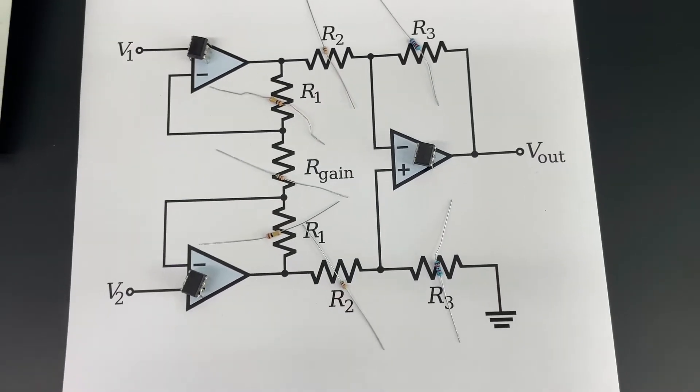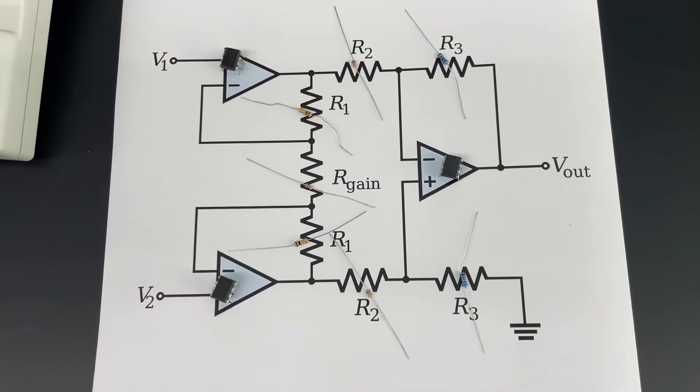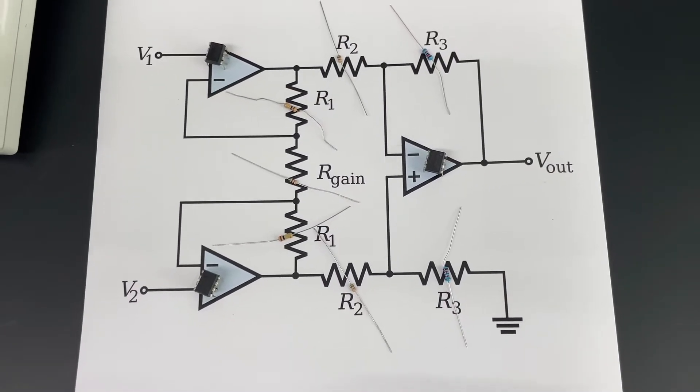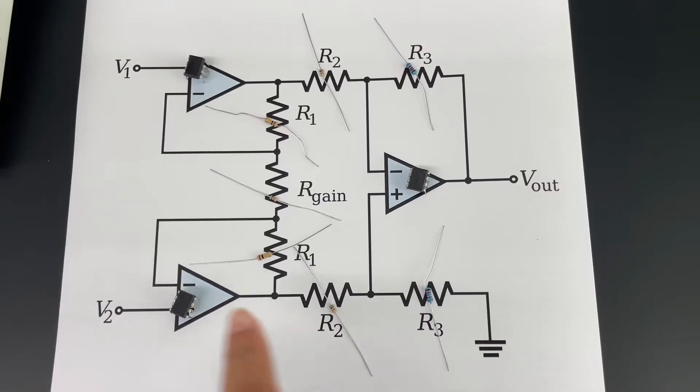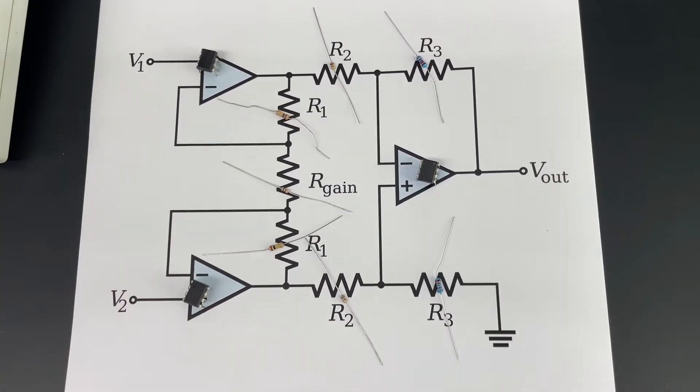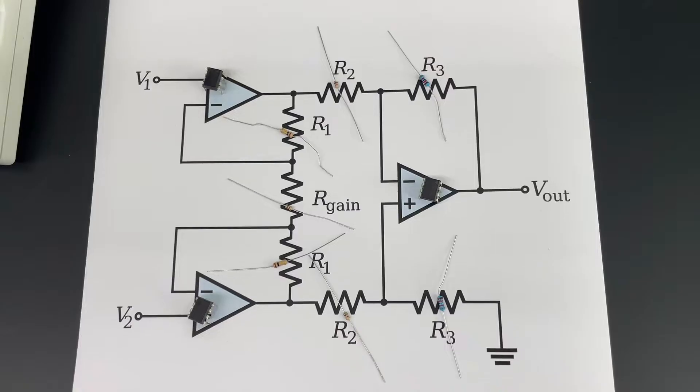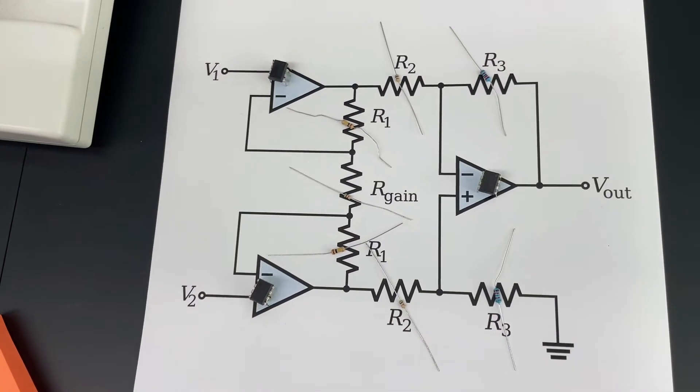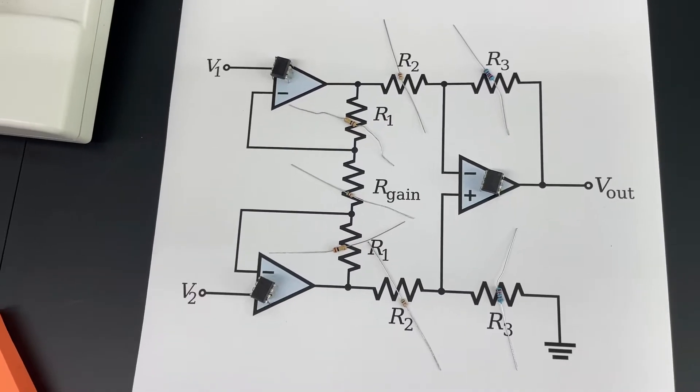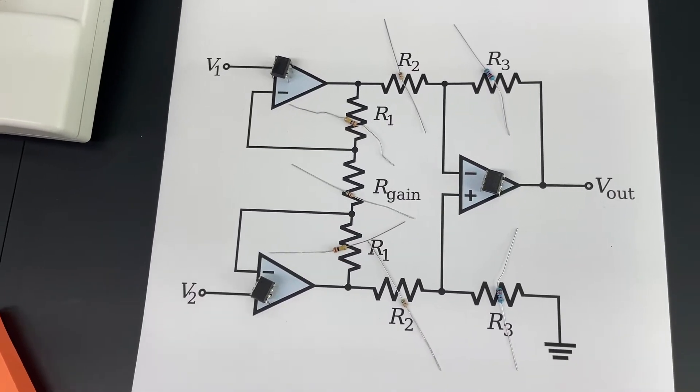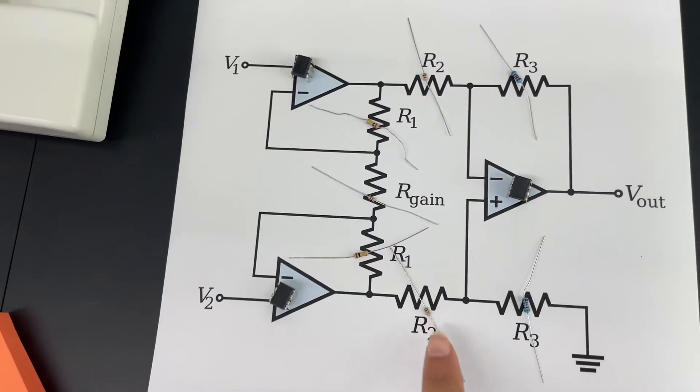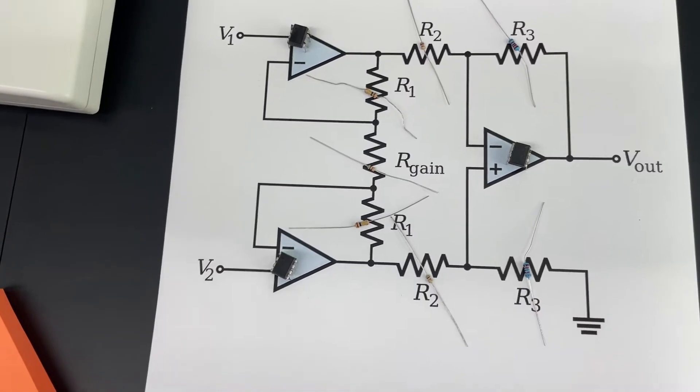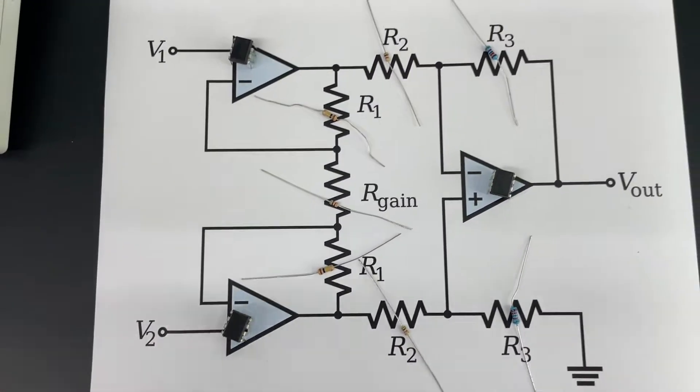In this video I'm going to implement this instrumentation amplifier and look at my ECG signal. As you can see I prepared the resistors for this design. I picked my R3 to be 82k, my Rgain is 5k, my R2 is 5.1k, and R1 is 100k.